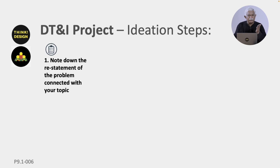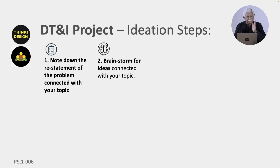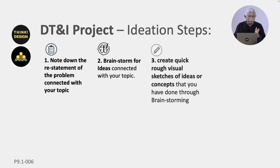Let us look at the steps. Note down the restatement of the problem connected with your topic — this is very, very important. Based on that, do ideation connected with your topic. You can brainstorm as many ideas as possible; stop when you really run out of them. You can sit with your friends and do it. Then quickly sketch — these are very rough sketches, but they tell you what the idea is and make it become visible. The ideas you got through brainstorming are now visualized.